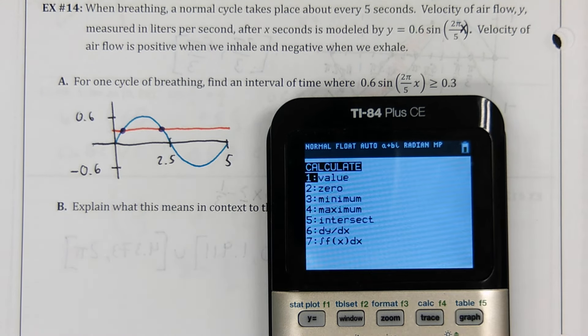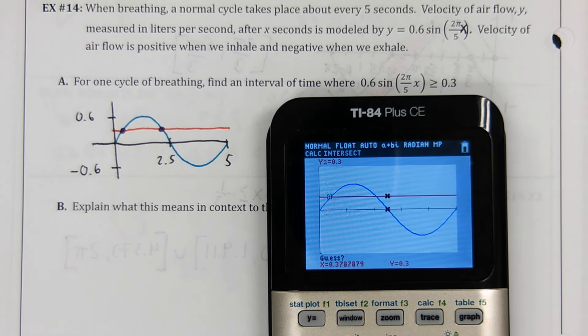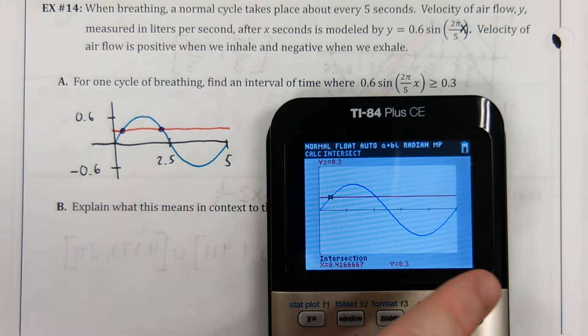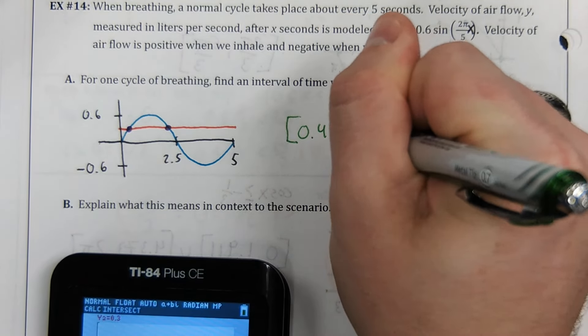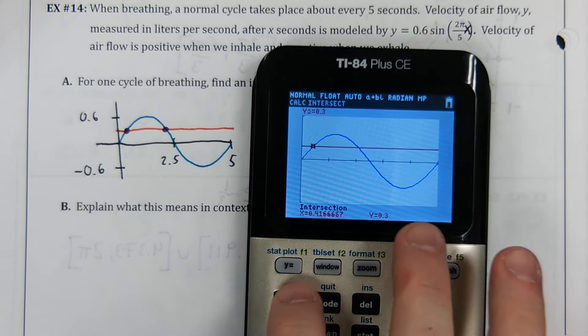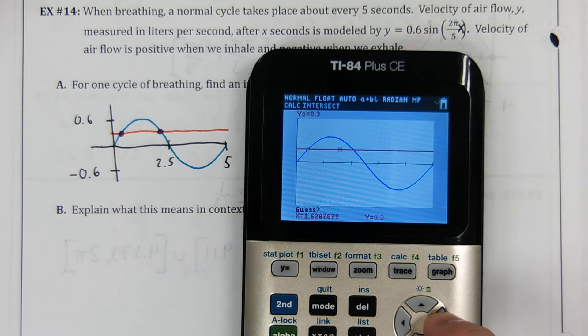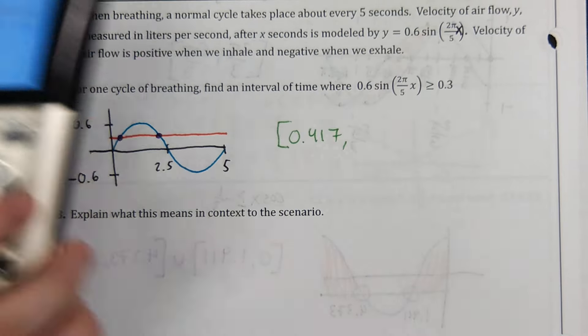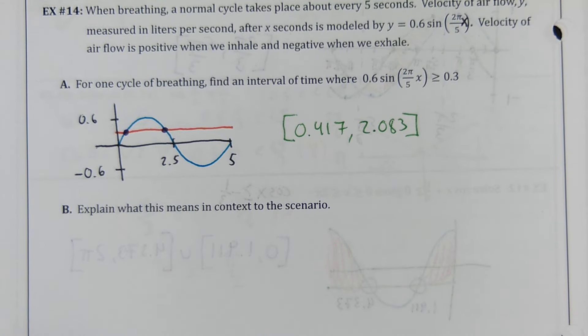There it is. We just need our two intersection points. 2nd trace 5, because that's intersect. Enter, enter, and scroll to the left. 0.417. Second trace 5, enter, enter, and scroll to the right. 2.083. So that is the time interval where breathing is greater than or equal to 0.3.